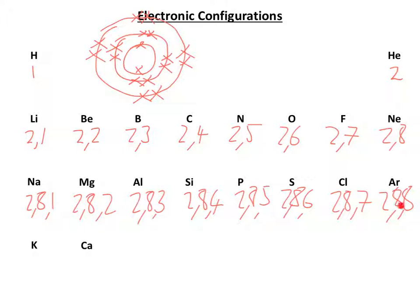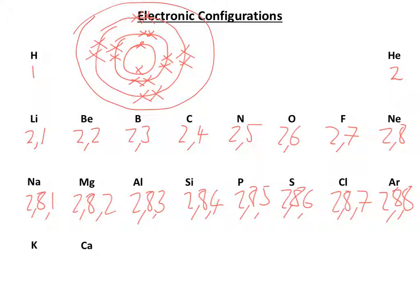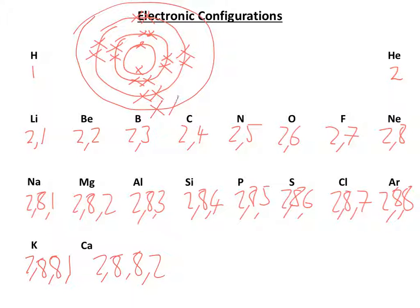Continuing through to argon, which is two, eight, eight — and like neon and helium, because it has a full outer shell, argon is very unreactive. That third shell is now full with eight electrons. So when we want to add potassium, we need a new shell — potassium is two, eight, eight, one. And calcium is two, eight, eight, two.